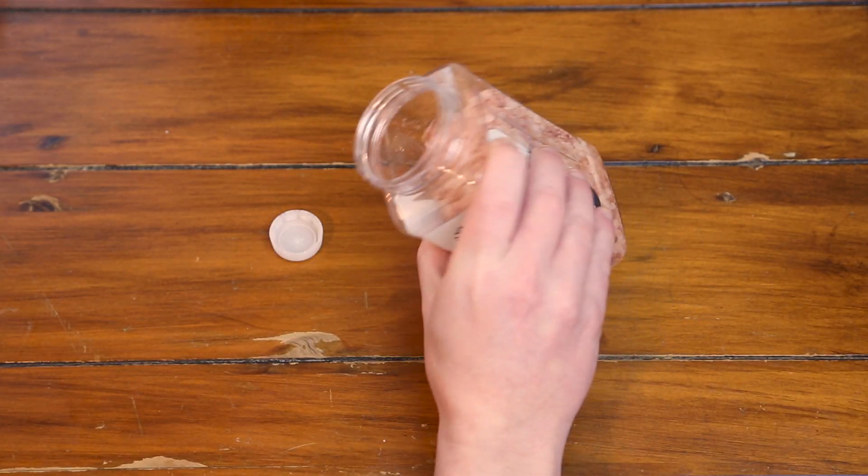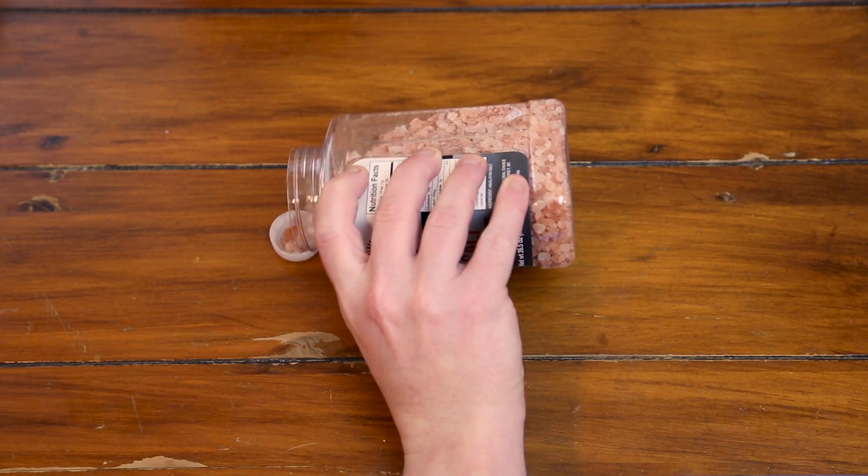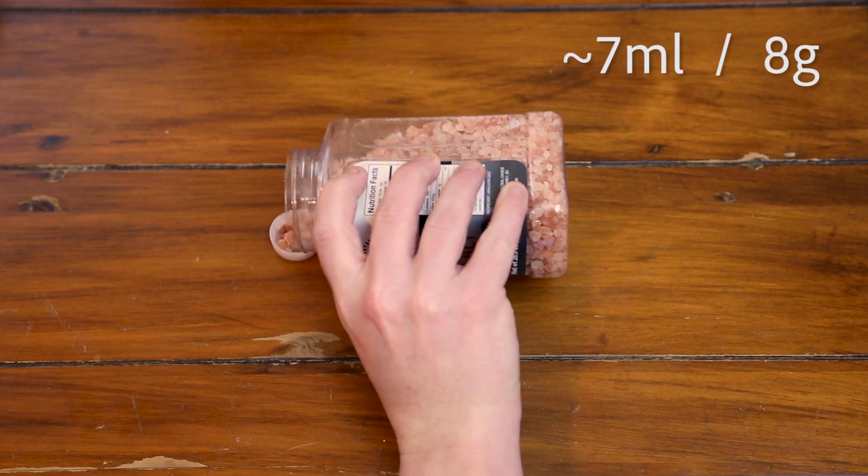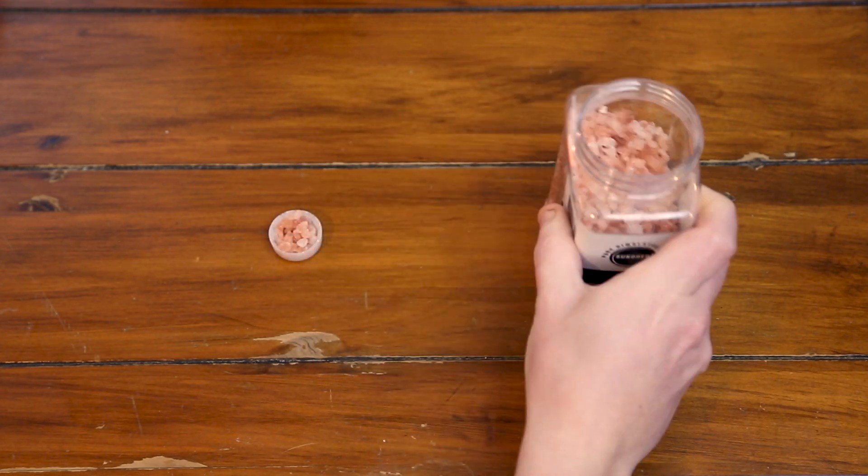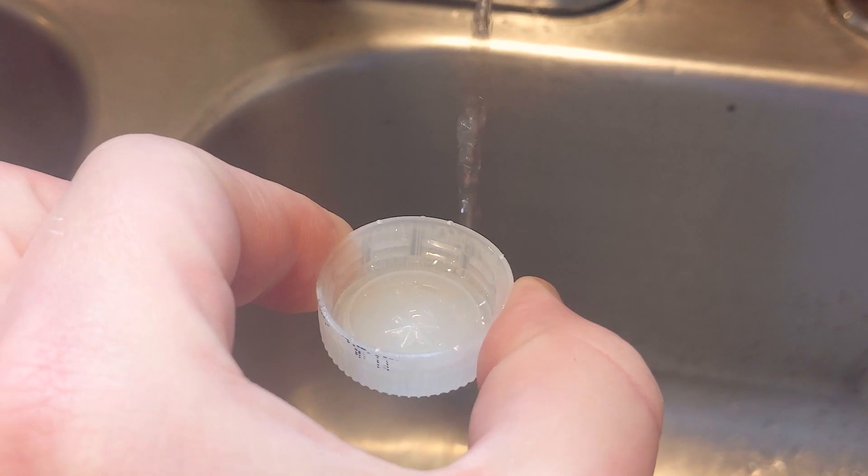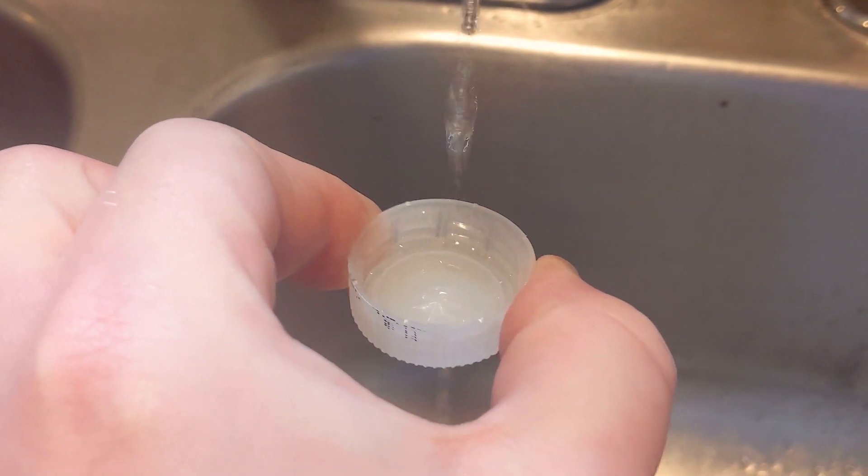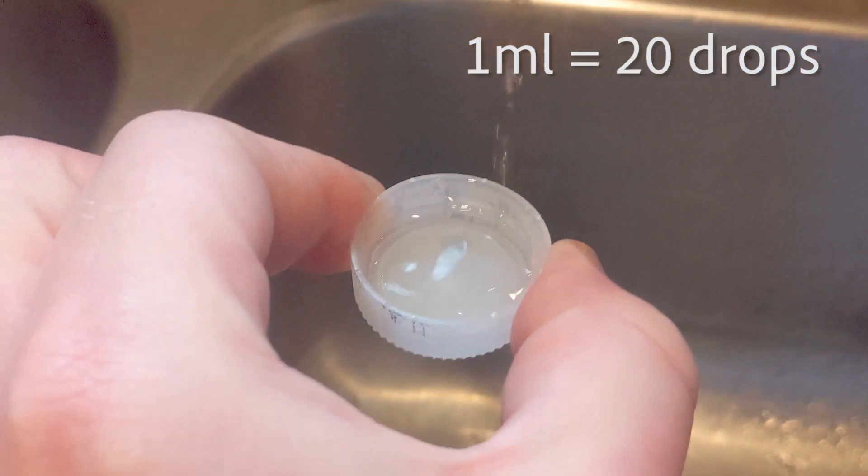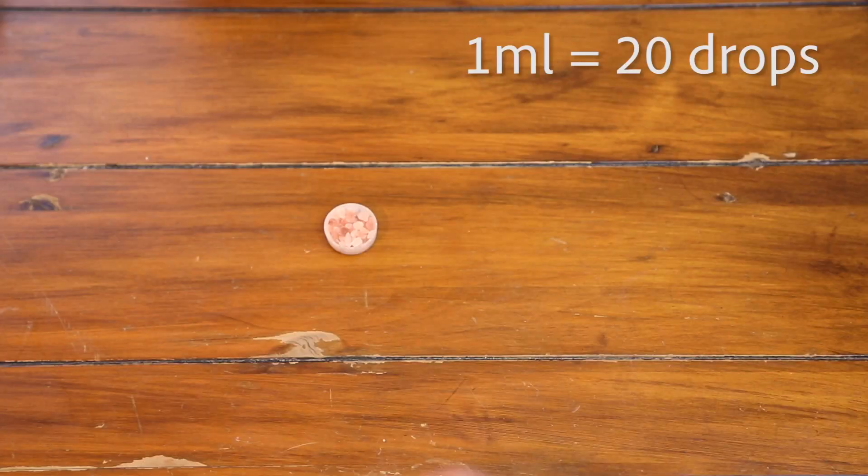Fill the bottle cap with as much salt as will fit, you can't use too much. This comes out to about 7 milliliters or 8 grams if you're measuring. Just add a tiny amount of water, just enough to cover the bottom of another bottle cap. 1 milliliter, 20 drops we're talking about.